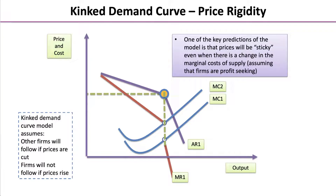One of the key predictions of the model is that prices will be sticky, even when there's a change in the marginal cost of supply — and this assumes that firms are profit-seeking. The kinked demand curve model assumes that other firms will follow if prices are cut, but will not follow if prices rise. So a key idea in oligopoly and the kinked demand curve model is price rigidity.